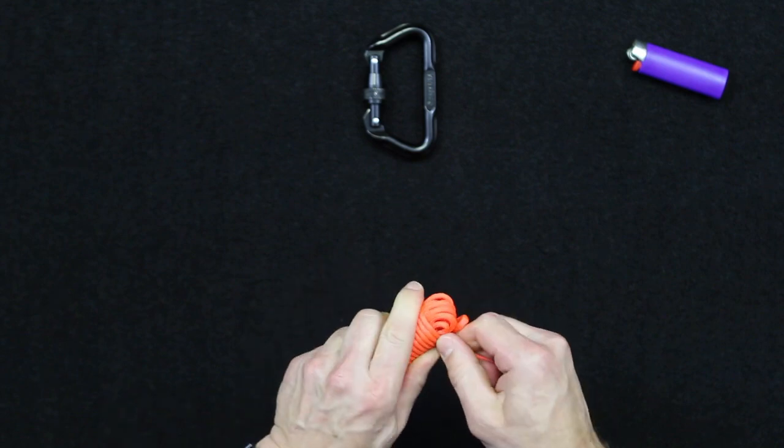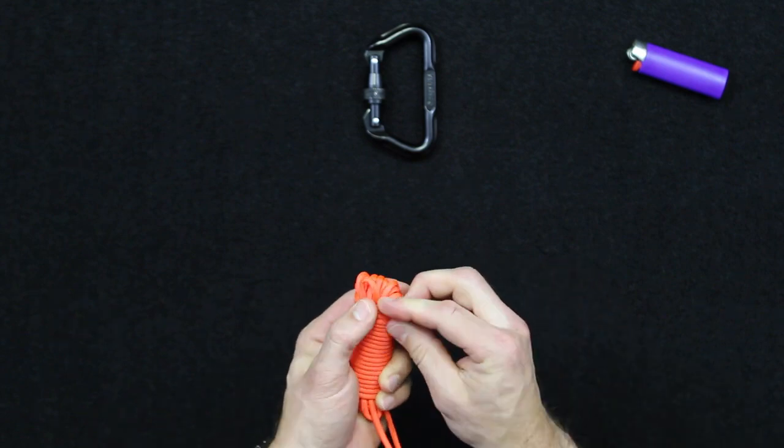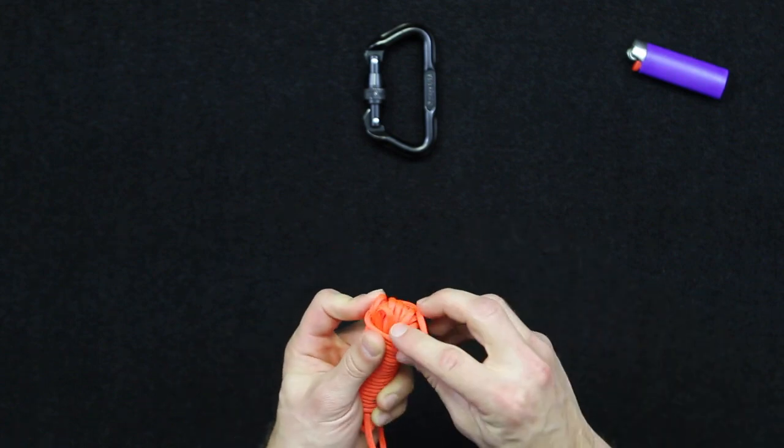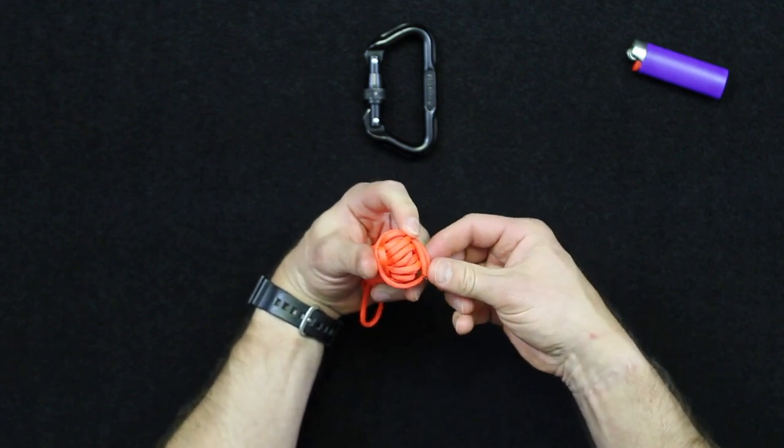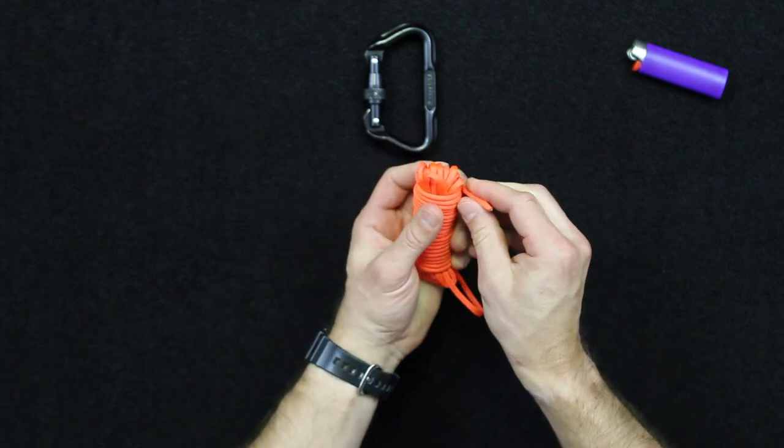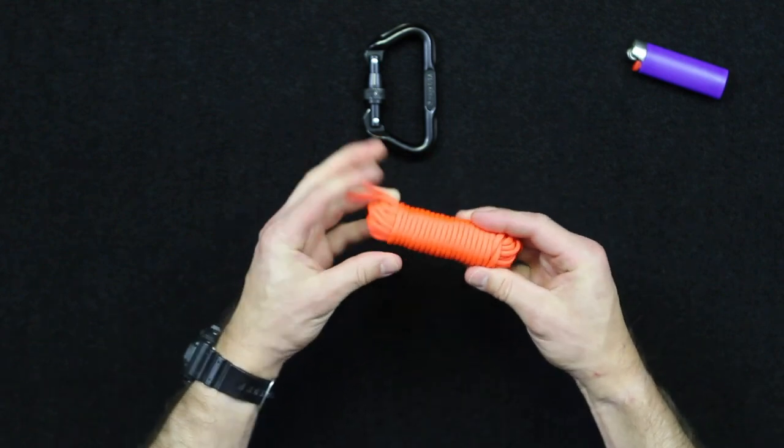So once you get to the end, you have a couple of options. You can either fuse this paracord at the end directly to itself, or you can create another lock in here, which I would recommend doing. So loosen that up, slip that paracord down in there just like that, and then tighten it up again. So you're additionally kind of locking it off to the bottom of the wrap.